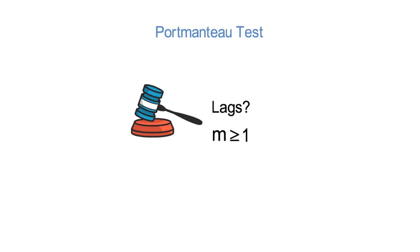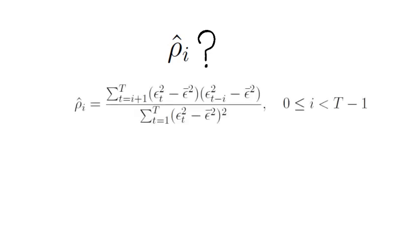The first thing you do is you need to determine the empirical autocorrelation of squared residuals, which I call rho hat i, where the lag is denoted by i. You do so up to length M, meaning mathematically you determine that empirical autocorrelation as follows, where epsilon bar to the power of 2 is the sample mean of the squared residuals.